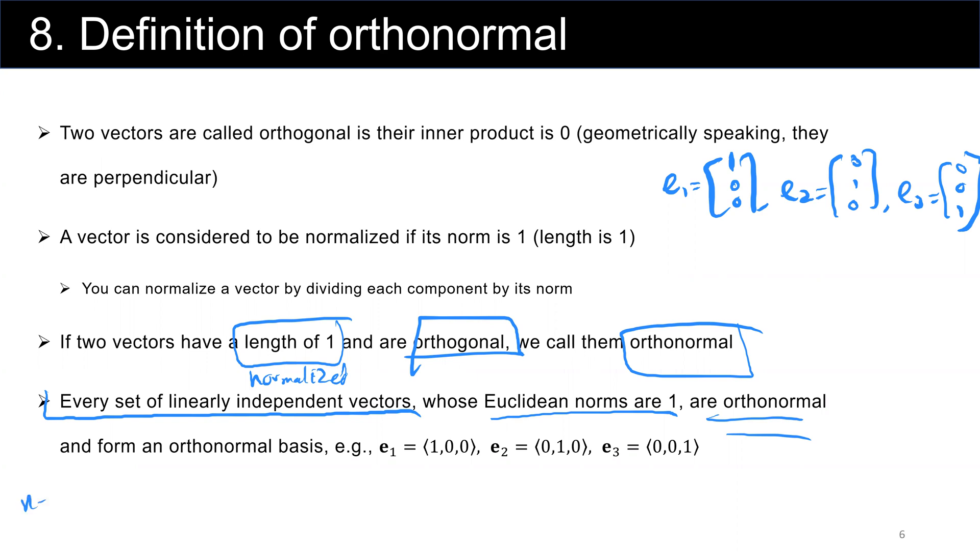Let's go to the generic case, n-dimensional space. An orthonormal basis for this space is: E sub 1 equals the first element 1, other elements 0. E sub 2: the first element 0, second element 1, all others 0.